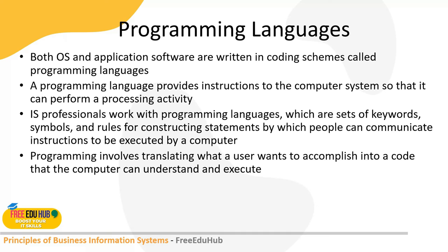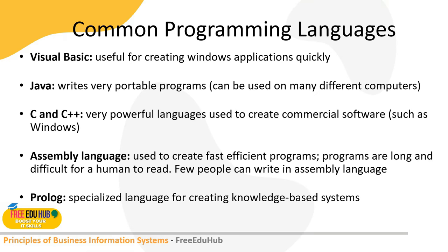Different programming languages include: Visual Basic, useful for creating Windows applications quite quickly; Java, which writes very portable programs usable on many different computers; C and C++, very powerful languages used to create commercial software such as Windows; Assembly language, used to create fast efficient programs though long and difficult for humans to read; and Prolog, a specialized language for creating knowledge-based systems. Programming languages have evolved through generations — languages released after 1980 are called fifth-generation languages, advanced enough to develop natural and intelligent programs.